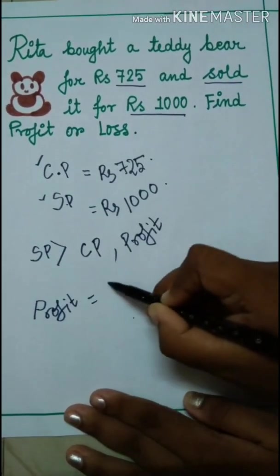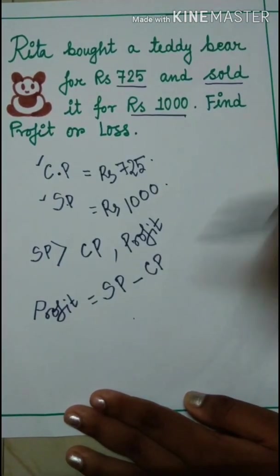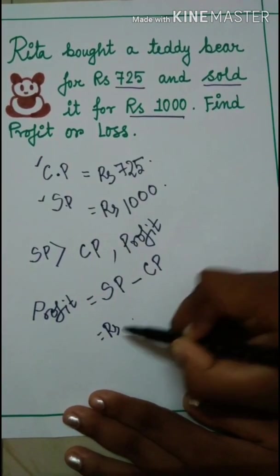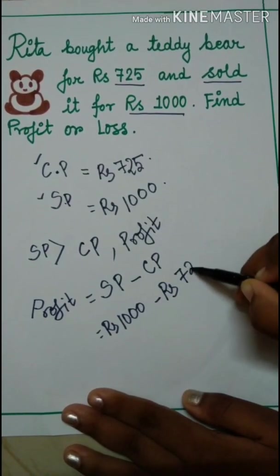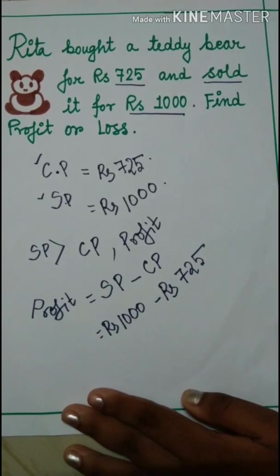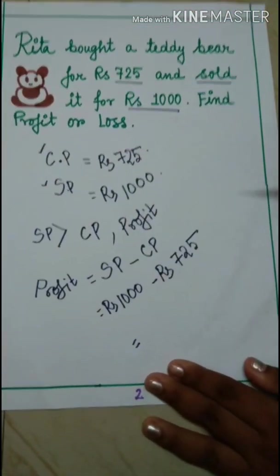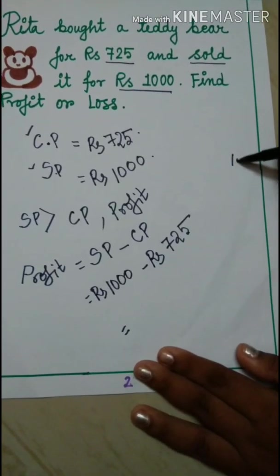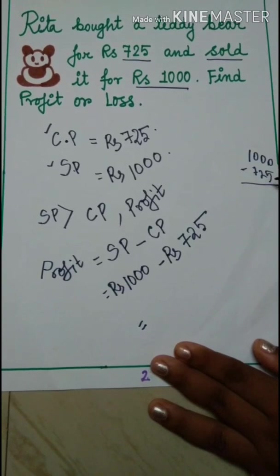Profit equals to SP minus CP. So what we have to do is Rs 1000 minus Rs 725. So whenever we will do in this way we will get our answer. So in the rough you can do the subtraction.